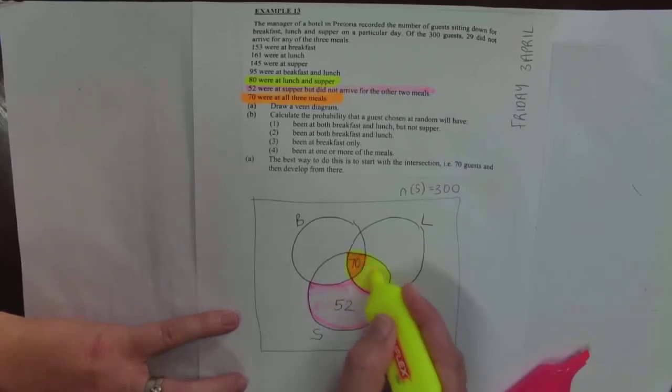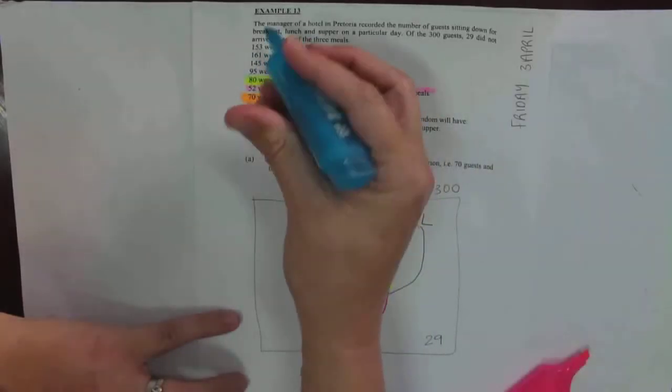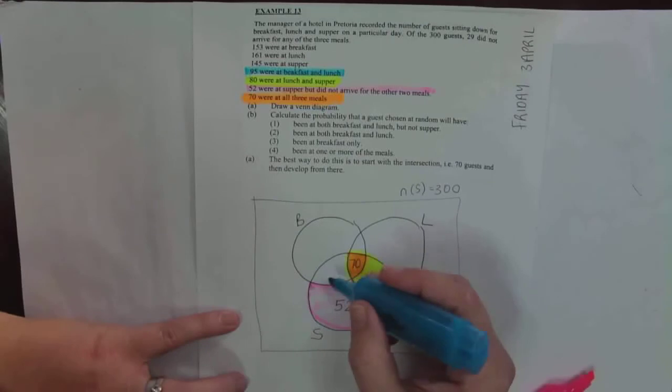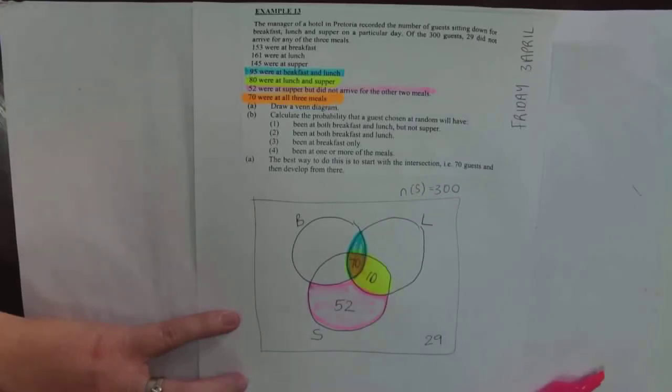95 were at breakfast and lunch. There's the breakfast, there's the lunch, so they must equal 95. I already have 70, so I'm short 25.